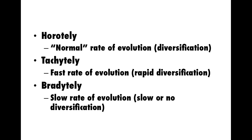Speaking of time, there are some terms that refer to rates of evolution. Horotile is a normal rate of evolution — by evolution, we mean diversification into different lineages. Tacotile is a fast rate of evolution or very rapid diversification. For example, the finches in the Galapagos Islands diversified relatively quickly because they had to occupy the different niches there — so that would be an example of tacotile.